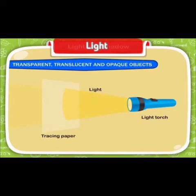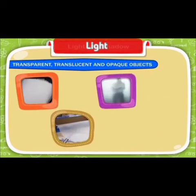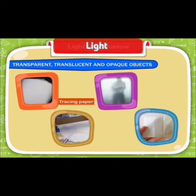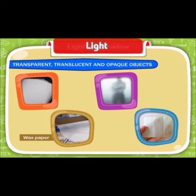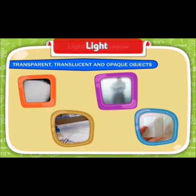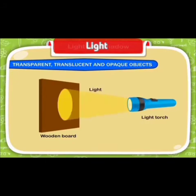Objects which allow only a part of light to pass through them are called translucent objects. Examples include dressing paper, frosted glass, wax paper, and oil paper.